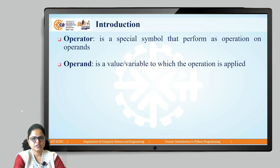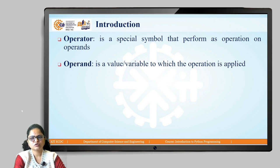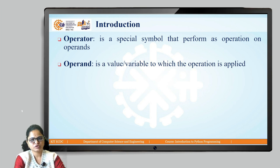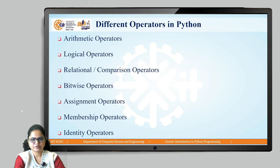Before going to that, we will see what is an operator and what is an operand. An operator is a special symbol that performs an operation on operands. And an operand is a value or variable to which the operation is applied. On the operands, we perform operations using the operators.